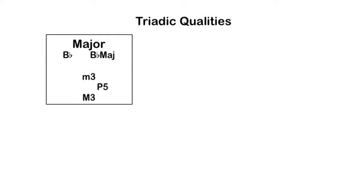A major third and a minor third added together creates a perfect fifth between the root and the fifth. Major triads are often described as having a bright or happy sound, although a skilled composer can manipulate that.